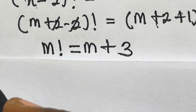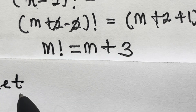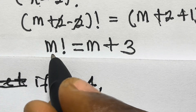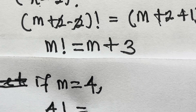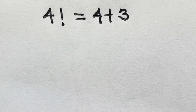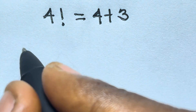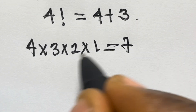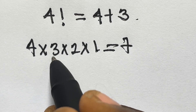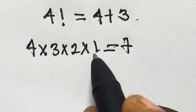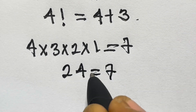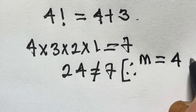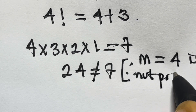Let's test m equals 4: 4 factorial equals 4 plus 3, that is 7. But 4 factorial is 4 times 3 times 2 times 1, which is 24. Since 24 does not equal 7, m equals 4 is not possible.